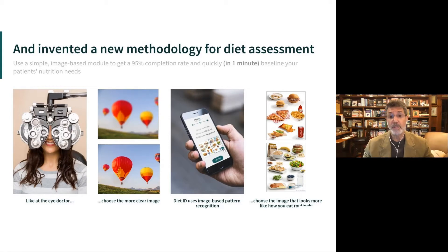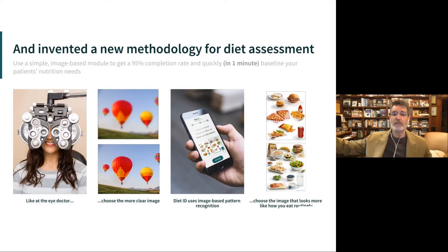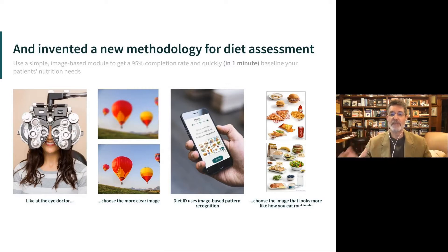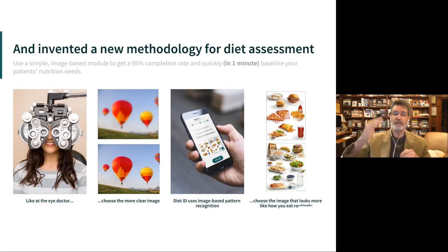It occurred to us that we could reverse engineer the process entirely. What if we could establish a map of the world's diets — starting with the United States — where on the x-axis we have diet type, operationally defined, capturing everything from paleo and low-carb keto at one end to exclusively plants at the other, with everything in between: flexitarian, pescatarian, Mediterranean, vegetarian, ethnic diets, everything everybody eats. On the y-axis, we use the best validated measure of diet quality, which is currently the Healthy Eating Index 2015, stratified into 10 tiers of quality.